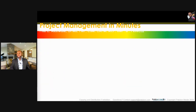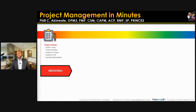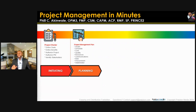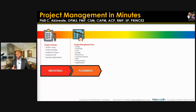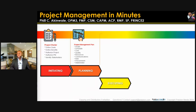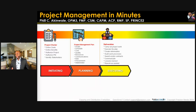The first process group is initiating, where we develop a project charter and identify our stakeholders. Second is planning — we plan everything: scope, schedule, cost, quality, resources, communications, risk, procurement, and stakeholder management. Then we have executing, where you carry out the work, execute the plan, and create deliverables.